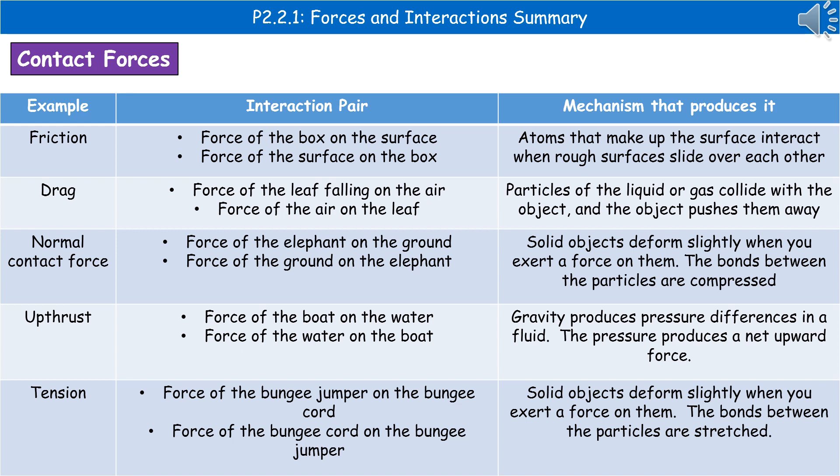If we consider friction first as a contact force, our interaction pair is the force of the box on the surface and then the opposite is the force of the surface on the box. The mechanism that produces friction is all down to the fact that we've got atoms that make up the surface of the box and the surface itself, and those atoms will interact when the rough surfaces slide over each other which generates the friction.